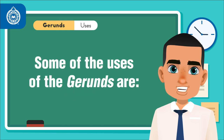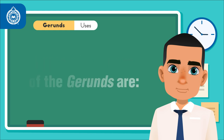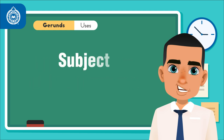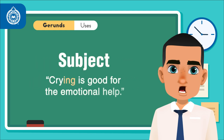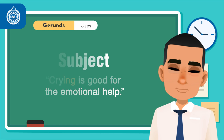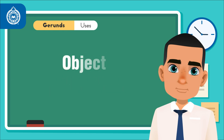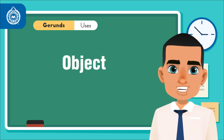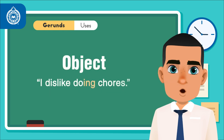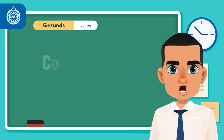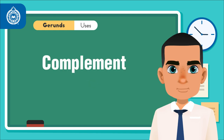Some of the uses of the gerunds are: as a subject — for instance, crying is good for emotional health; as an object — I dislike doing chores; and as a complement — I love cooking.